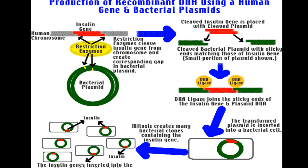This is a human chromosome which has an insulin gene. In this rDNA technology, we want to produce insulin, so we are isolating the insulin gene from the human chromosomes. We separate the insulin gene by using restriction endonuclease enzymes — we take the human DNA, fragment it, and isolate the human gene which is able to produce insulin.